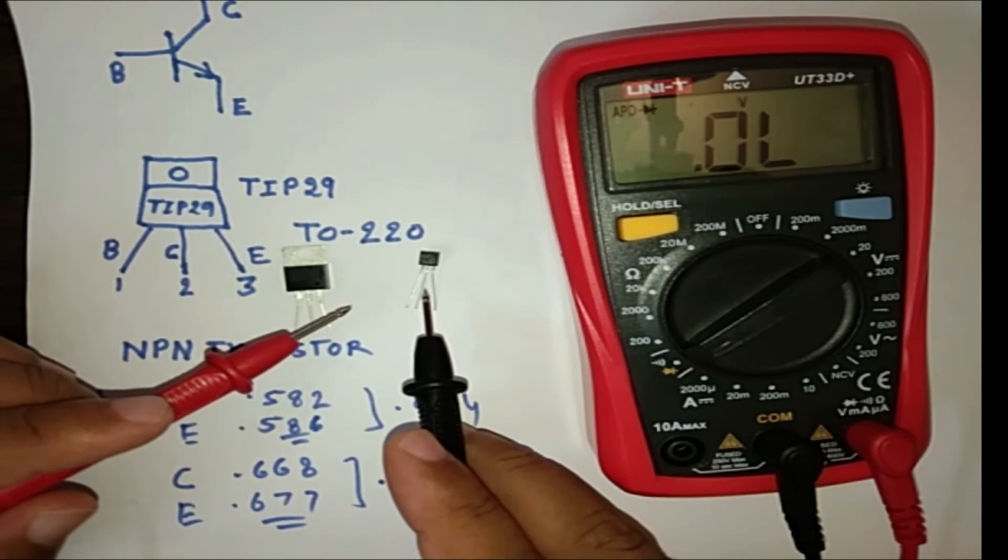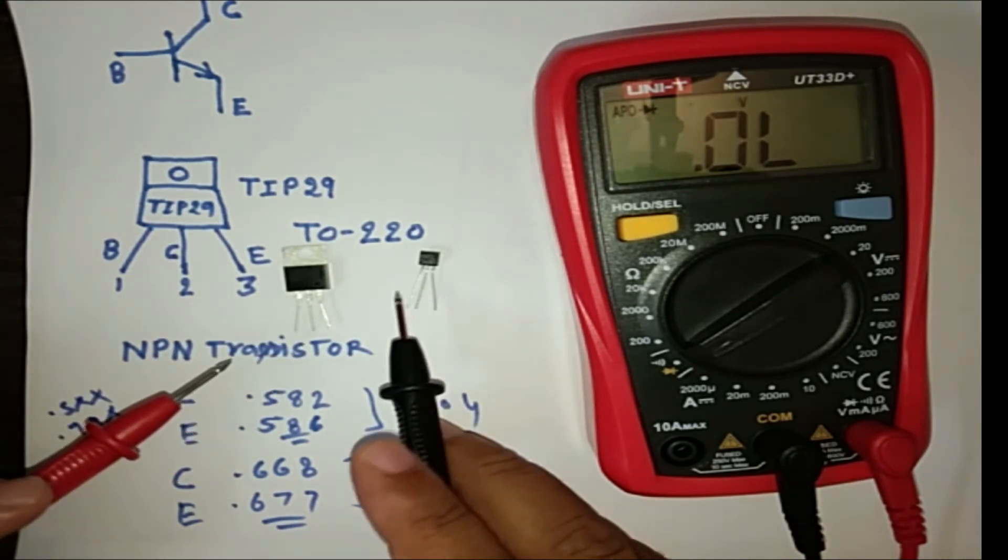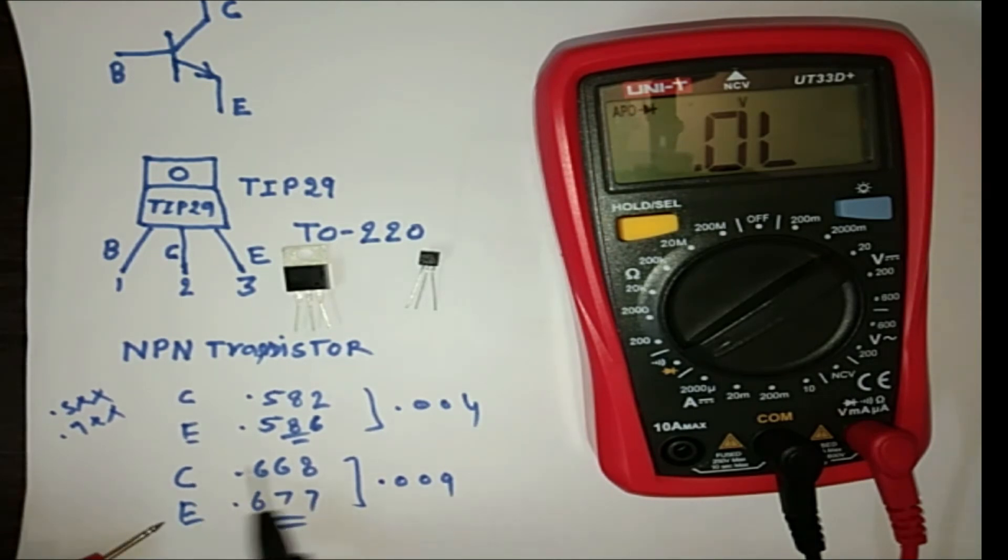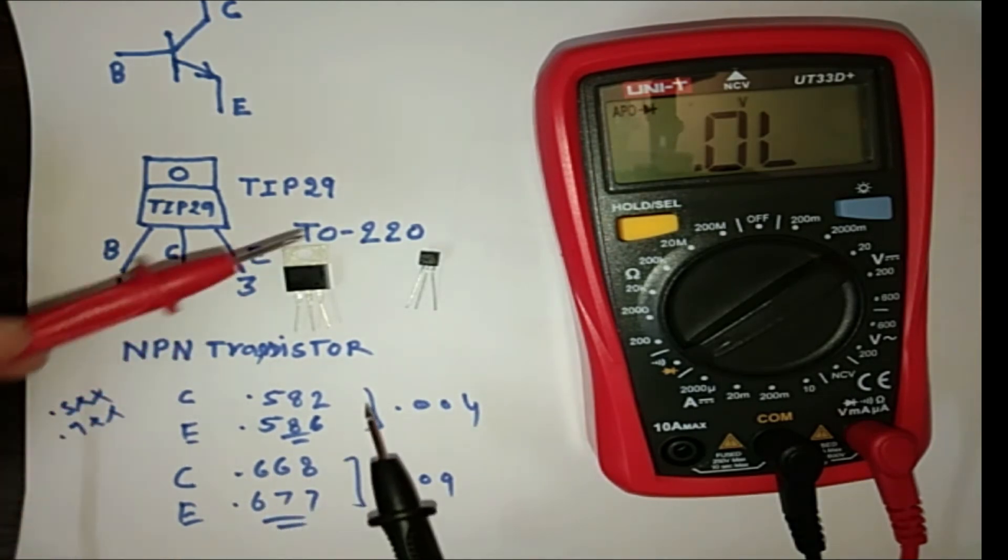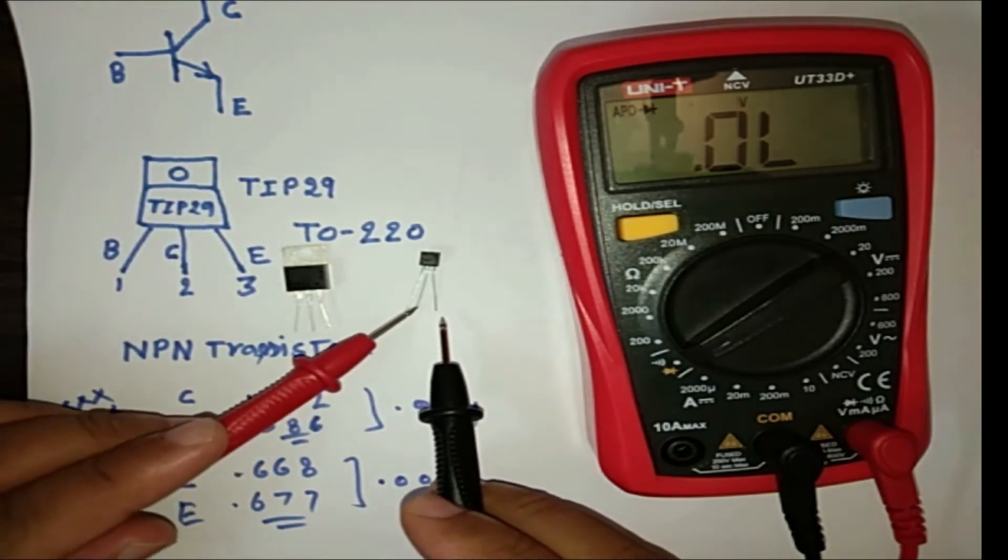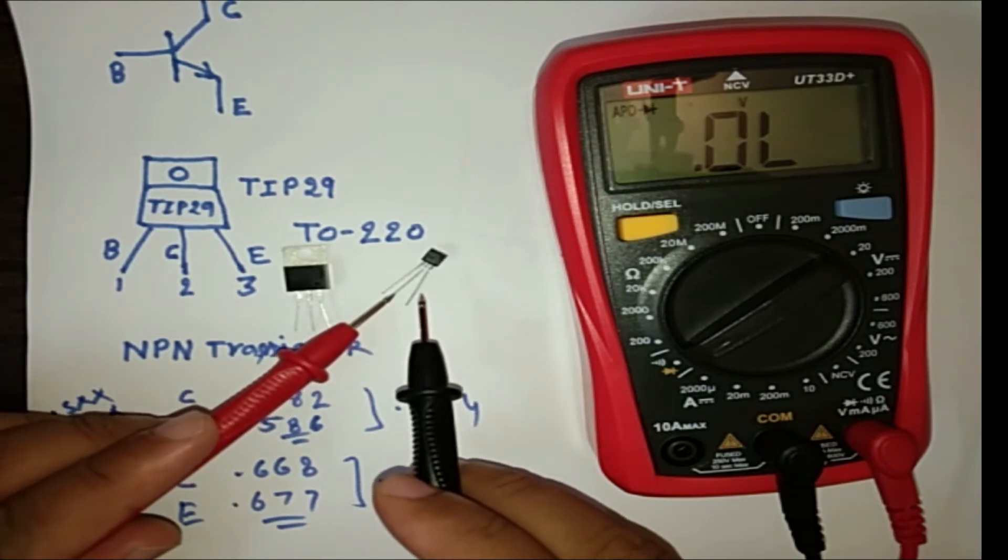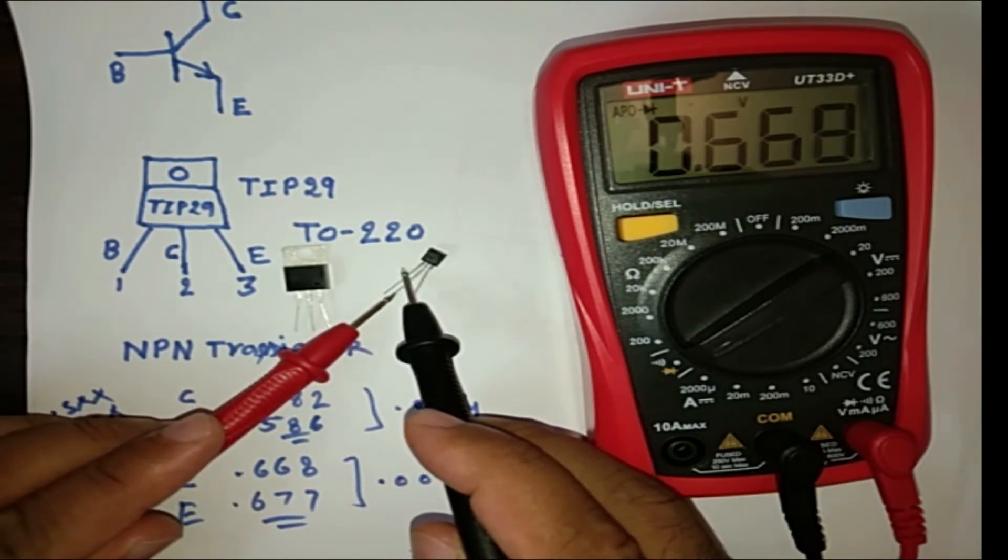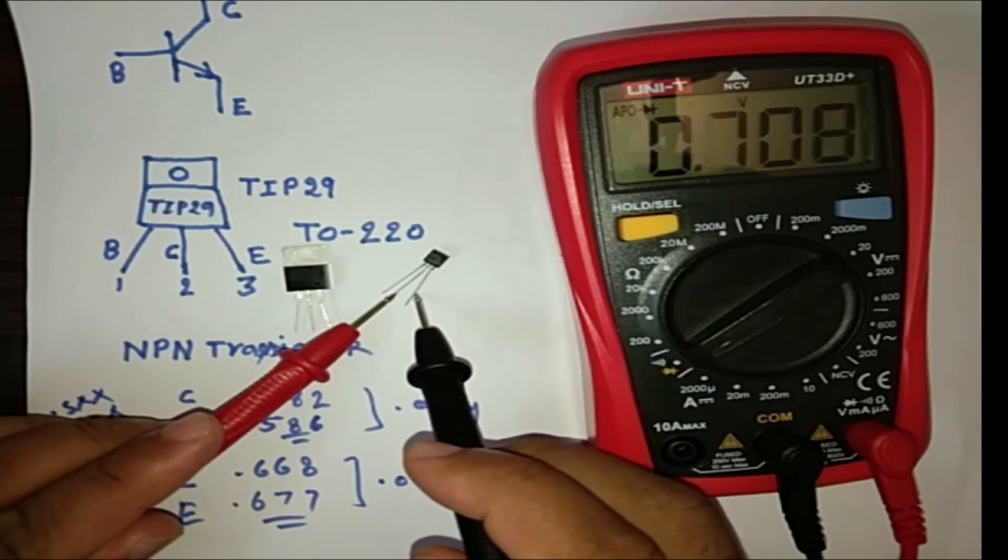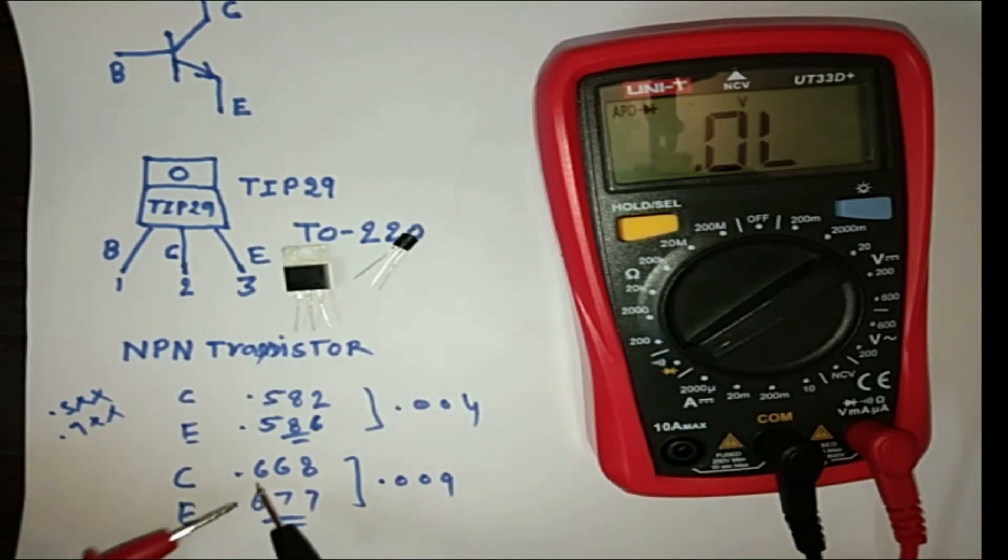And, if you measure the small type transistor, you will also get the same value. I measure the small transistor here. This is the small transistor rating. You can see here. And measurement way also same. Here the middle pin is base. And this is collector. You can see here, it is showing 0.668. And here it is showing 0.678. So you can see here. Base to collector 0.668. And base to emitter 0.678. So what is the difference between emitter and collector? 0.009. So this type of difference between emitter and collector rating you will get.